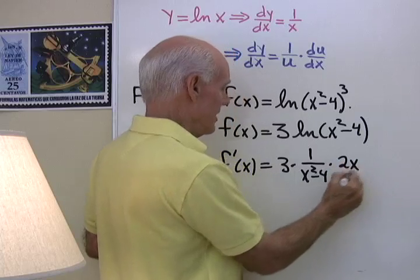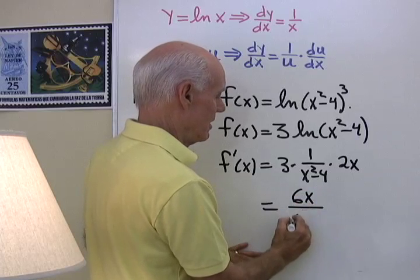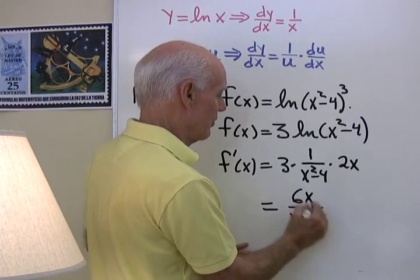So I'll simplify a little bit right here, 3 times 2 is 6x over x squared minus 4.